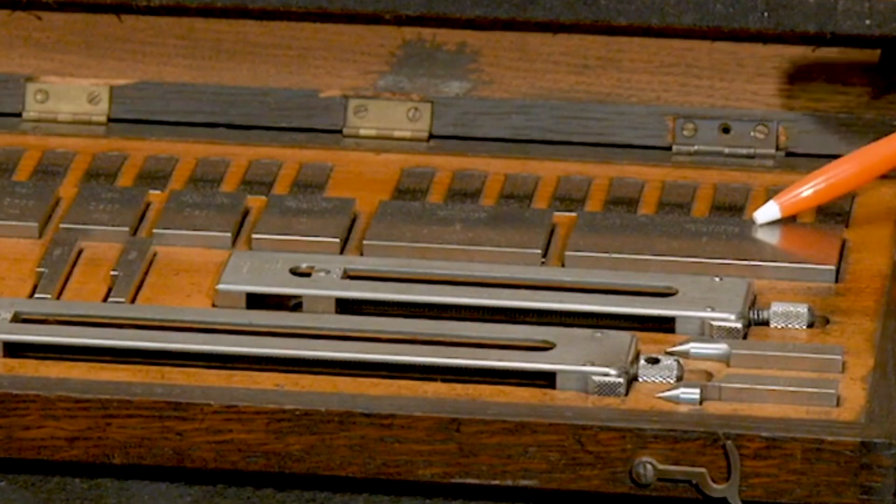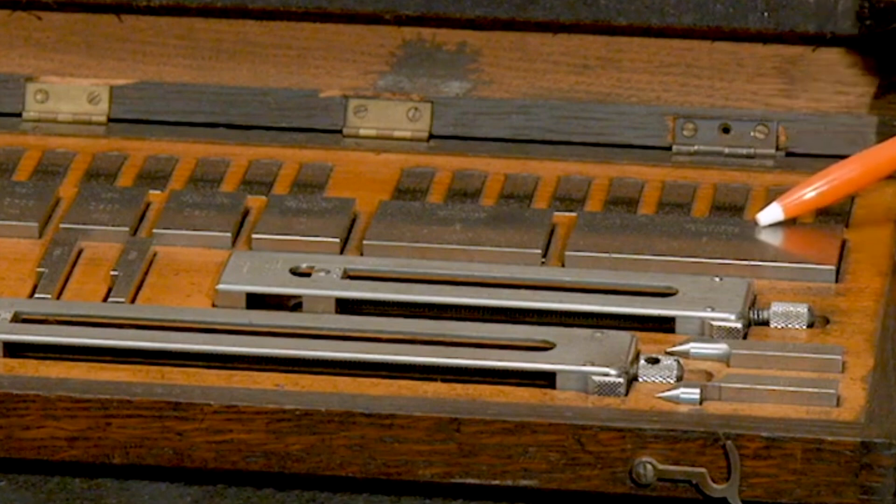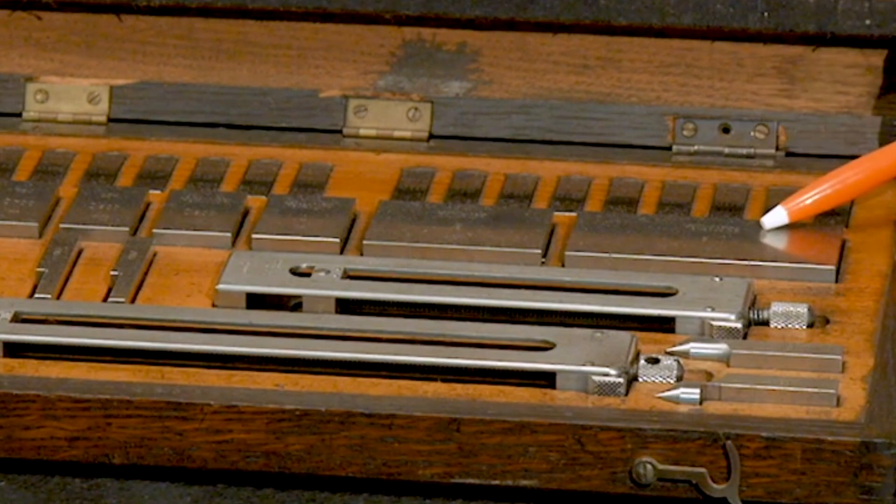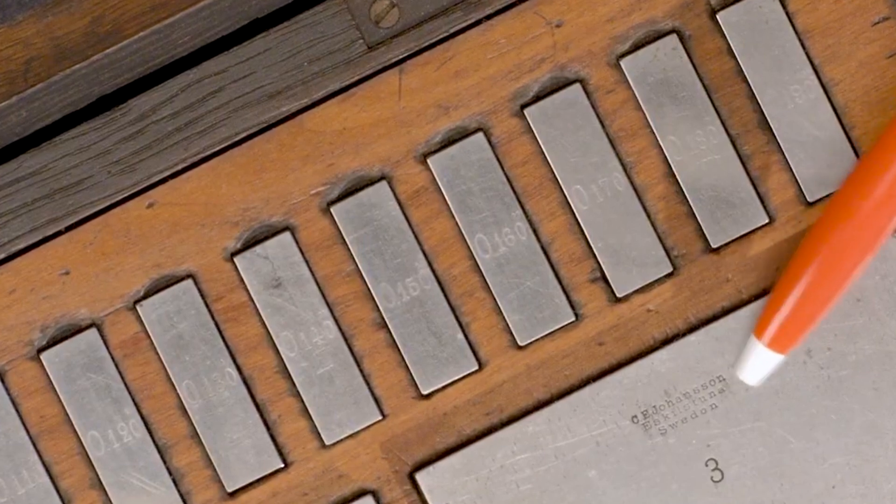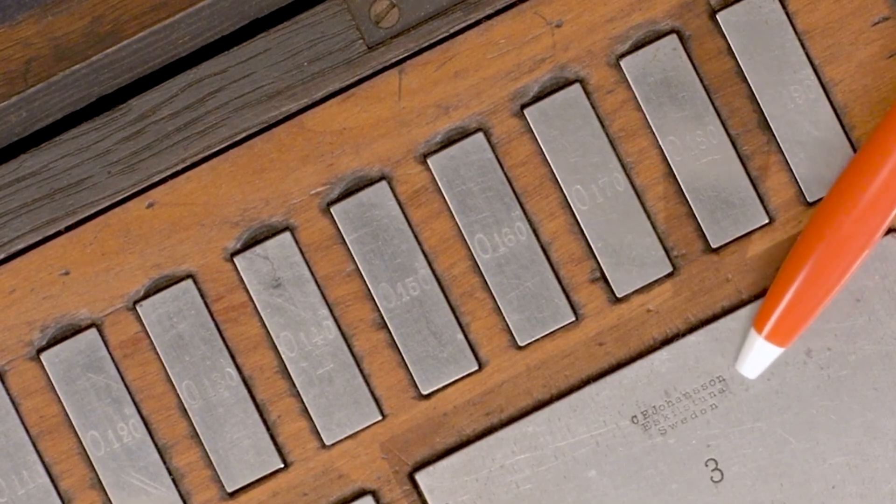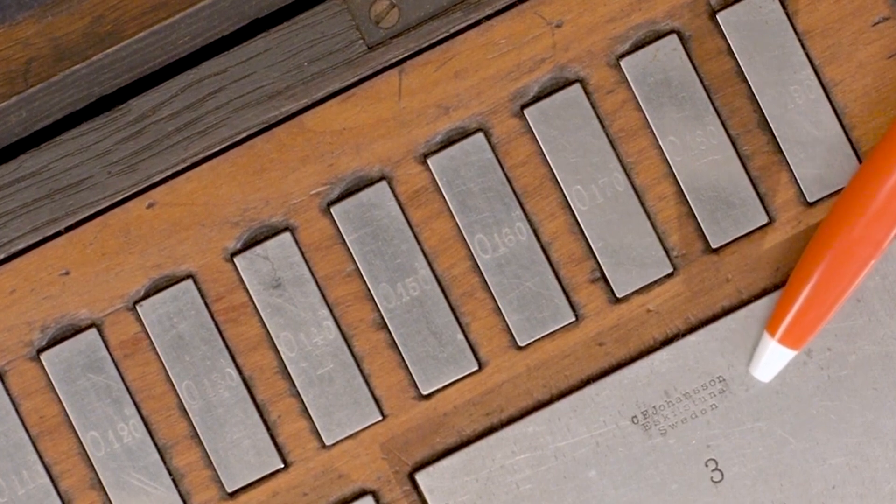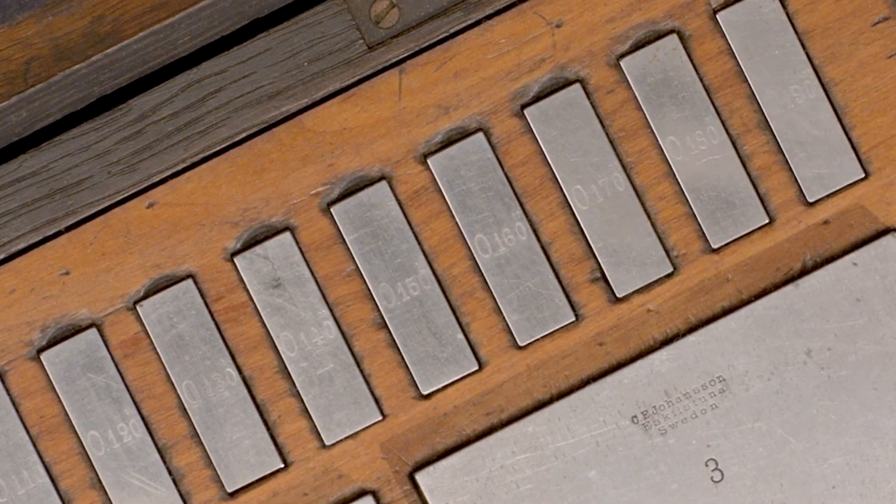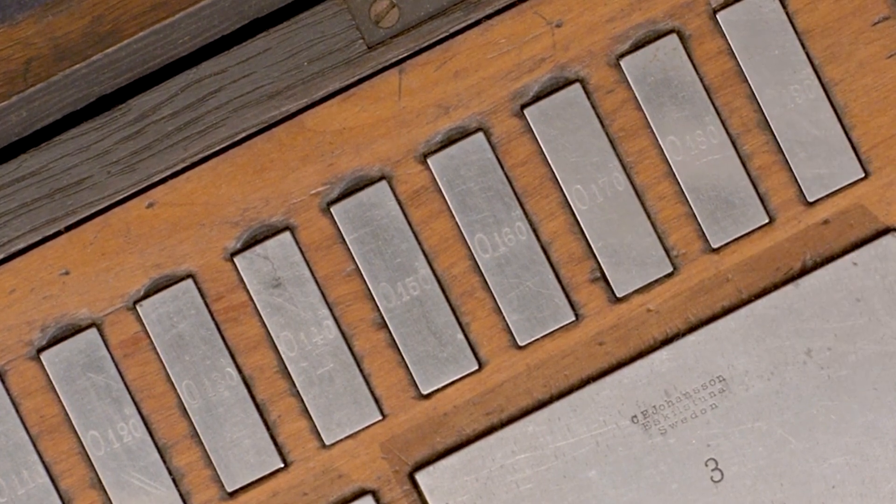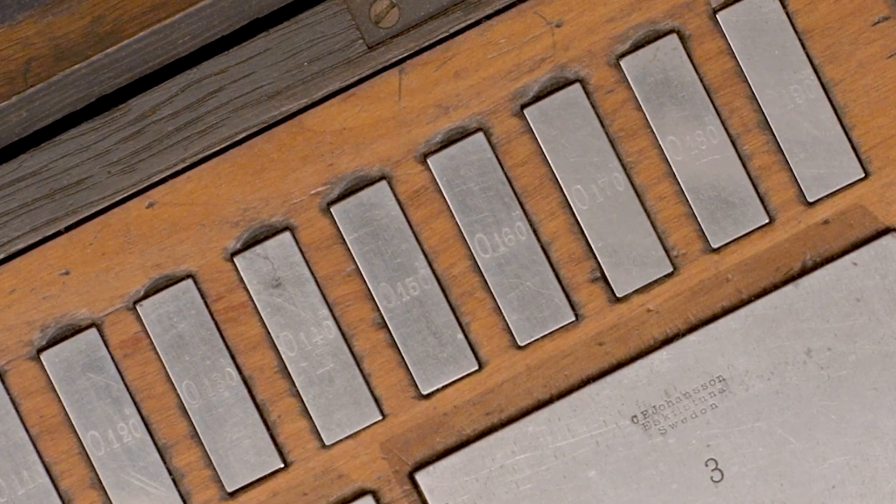We have here an actual set of Johansson blocks that one of my colleagues at Mitutoyo America collected. You can see the Johansson name and Sweden marked on the Gauge Blocks. The sets we sell today don't look much different. Modern Gauge Block sets basically follow his 100-year-old patent.